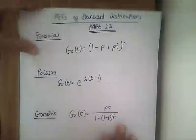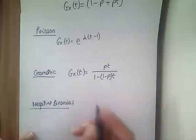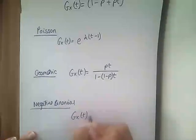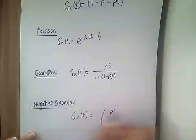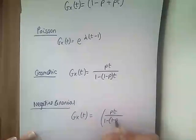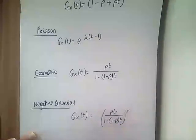Your geometric is pt over 1 minus 1 minus pt. And finally, your negative binomial is pt over 1 minus 1 minus p lots of t all to the power of r.